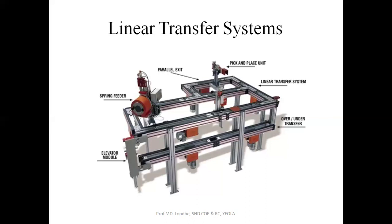Either a chain or a belt drive can be used for carrying work from one point to another or from station to station. Many machining type transfer lines utilize a walking beam transfer system in which parts are synchronously lifted from one point to another station and moved forward, either by a pick and place unit using a robot or manually from one station to another.